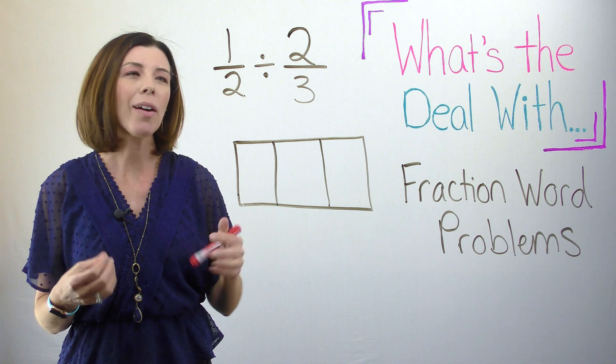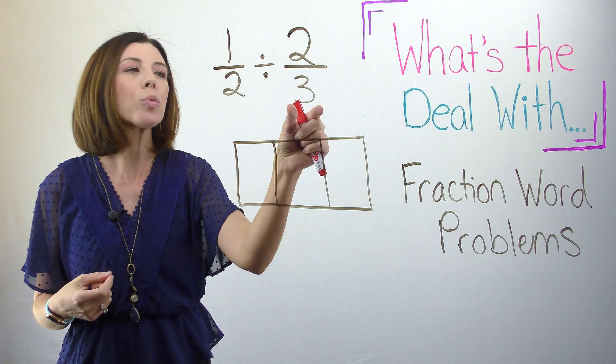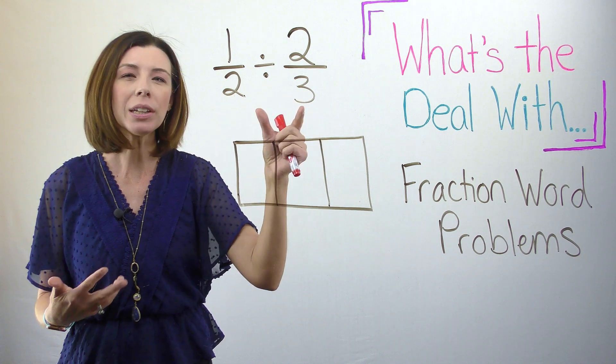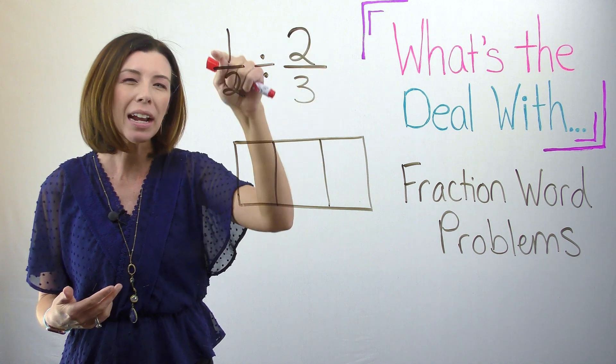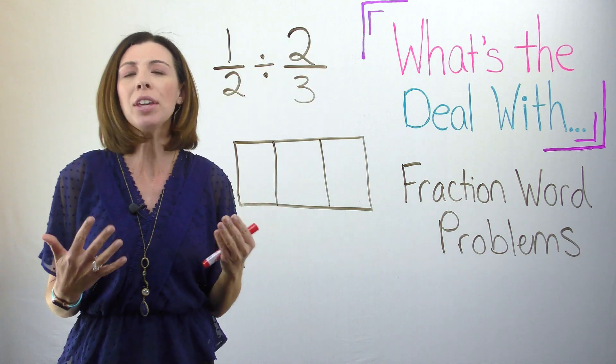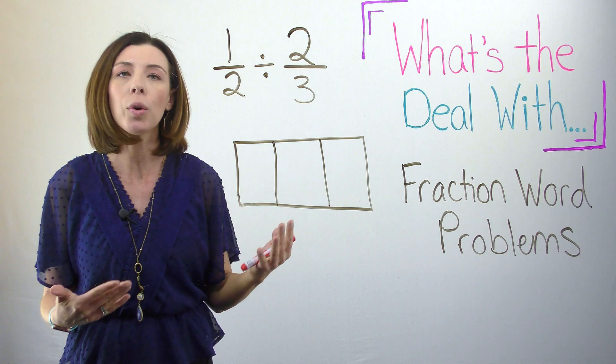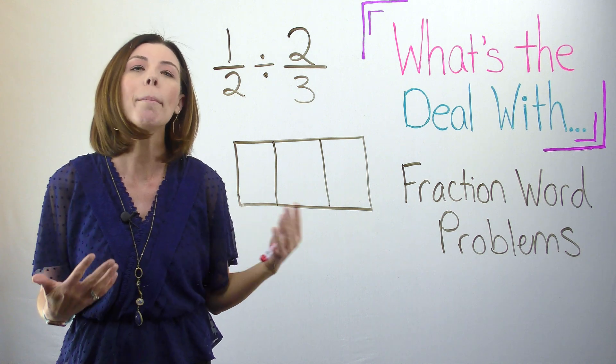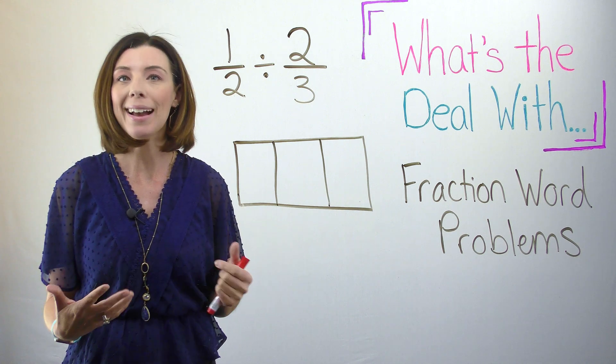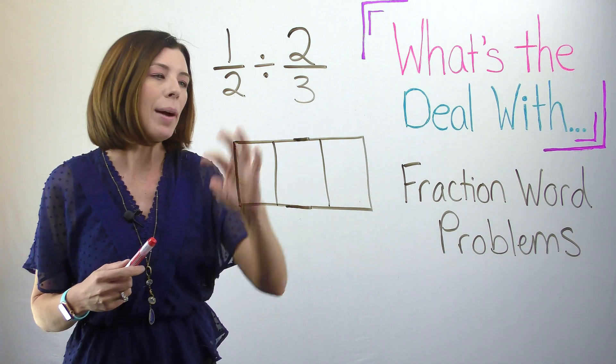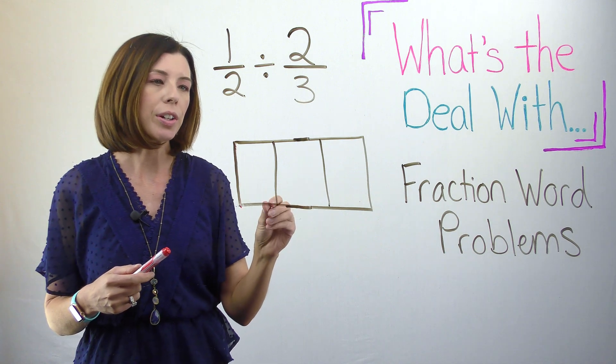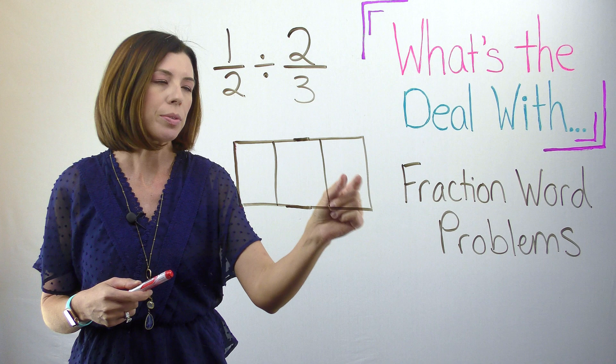Okay. So again, I'm thinking about, I only have one half, the recipe calls for two thirds. So I'm really asking myself, how many copies of two thirds can I fit into one half? I know that I can't make a whole recipe. So I need to know what part of that whole recipe I can make. So I have my whole that I've partitioned into thirds. And you can see one third, two thirds, three thirds.